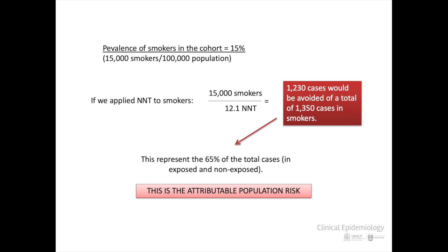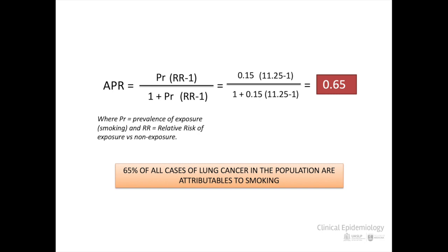The APR can be calculated directly with a formula, using the prevalence of the risk factor in the population and the RR.